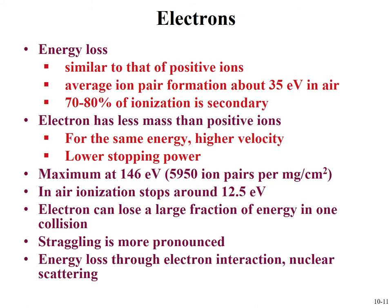Moving to negatively charged particles — electrons — the energy loss is similar to charged particles, with average ionization in air around 35 eV. About 70–80% of the ionization is secondary, due to the mass difference. The electron has much less mass than positive ions, so for the same energy it has higher velocity and therefore lower stopping power. At a maximum of around 150 eV, you get close to 6,000 ion pairs per mg/cm².